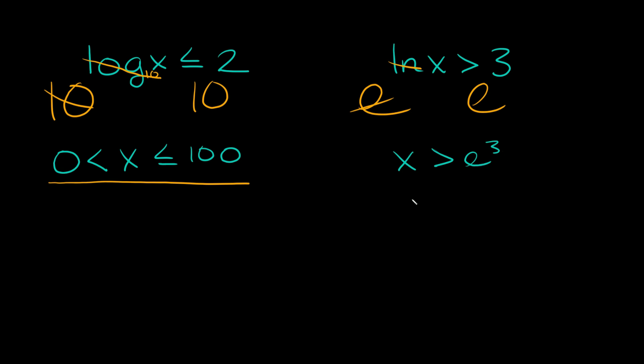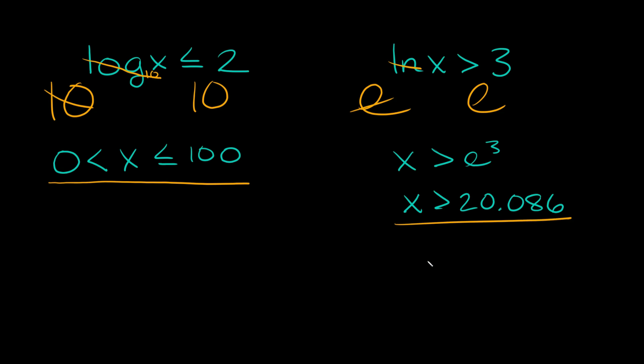If you plug that into your calculator, you'll get — rounding to three decimal places — that x is greater than approximately 20.086. We can see that all our x values are clearly bigger than any negative number, so this is totally fine. This is our answer.